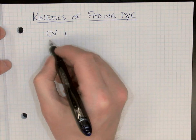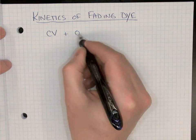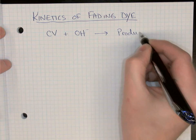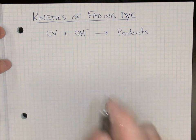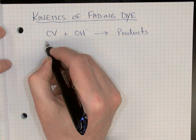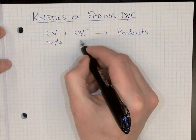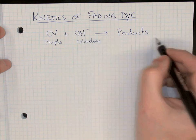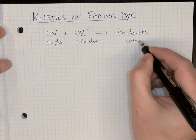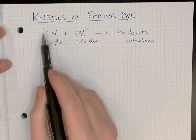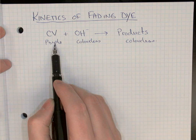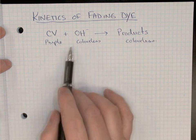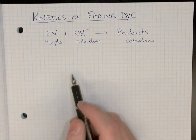We're reacting crystal violet, which is a bright purple dye, with sodium hydroxide, which contains the hydroxide ion, and that will produce products. This is a simplified chemical reaction. Crystal violet is bright purple, sodium hydroxide is colorless, and the products of this reaction are also colorless. Because the only colored reactant is crystal violet, the purple color is going to fade over time as it reacts with the hydroxide ion from sodium hydroxide.